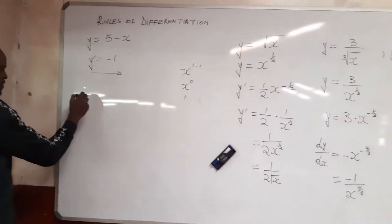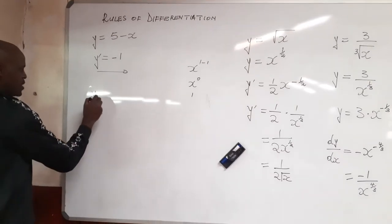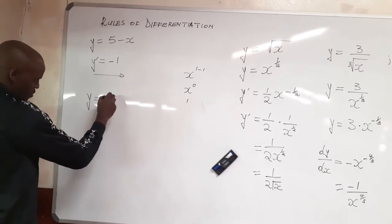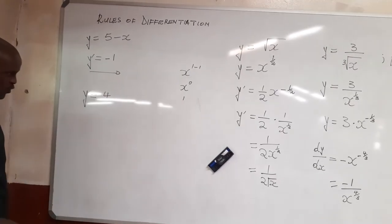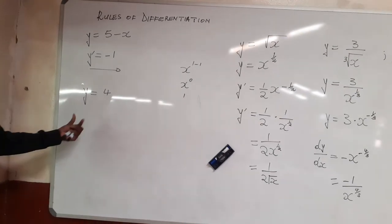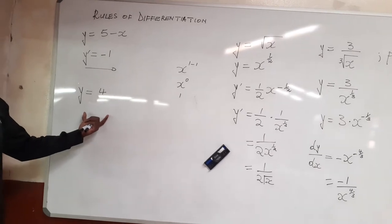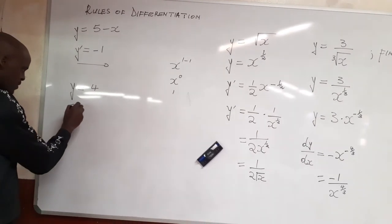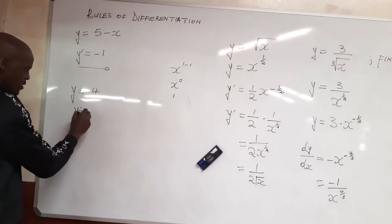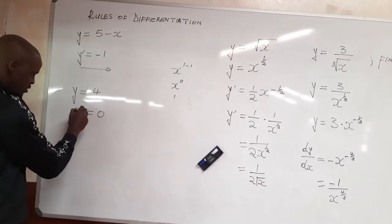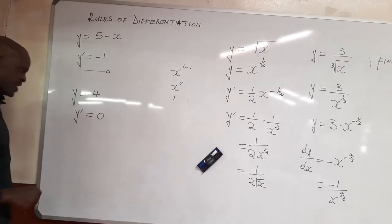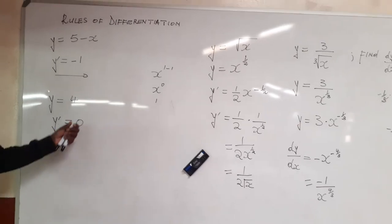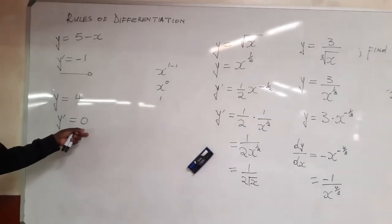Let's say you have y = 4 and the question is asking you to differentiate this. The gradient would be equal to 0, because we derive with respect to x and there is no x there. Therefore the gradient is equal to 0.